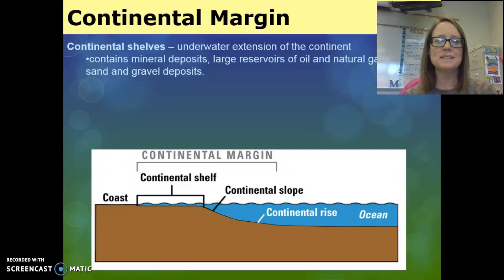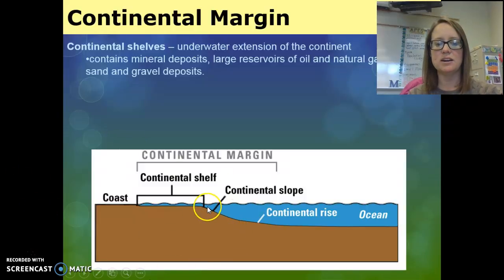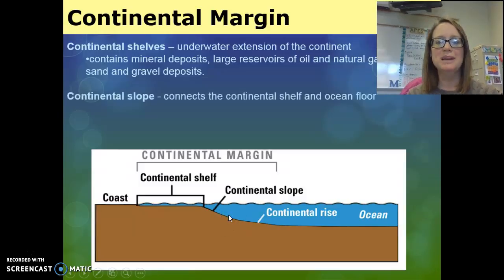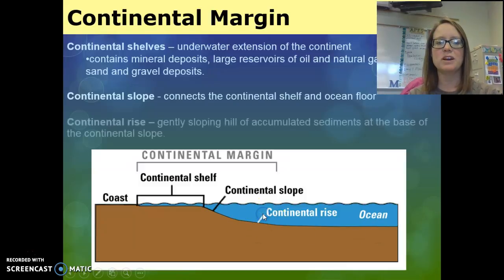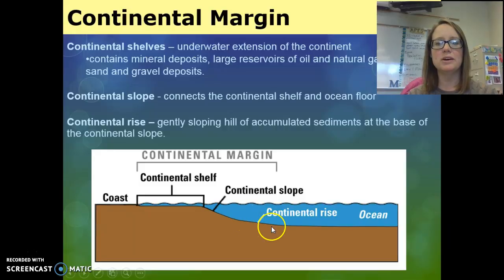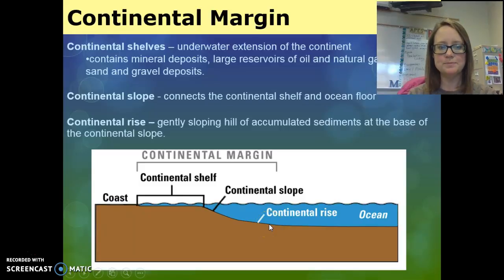Once you get past the continental shelf, you'll see that the depth starts to increase. This area is called the continental slope, and it's the area that connects the continental shelf and the deeper ocean floor. At the base of the continental slope, we have the continental rise — that gently sloping hill where sediments that have washed down the continental slope accumulate.